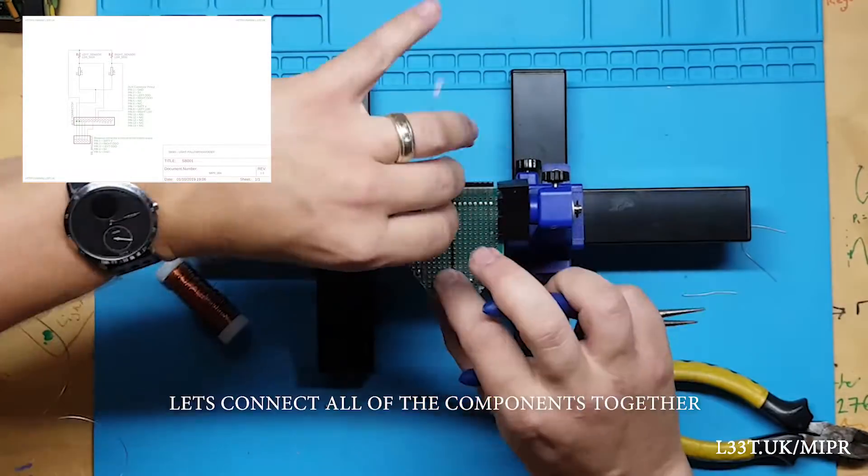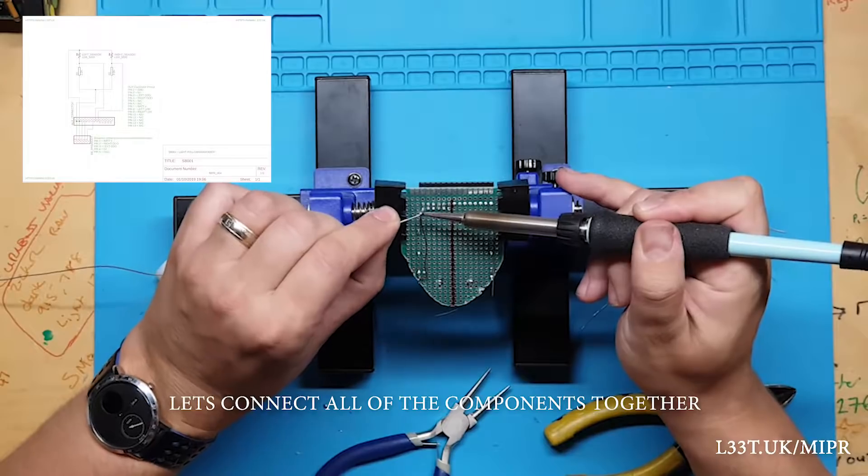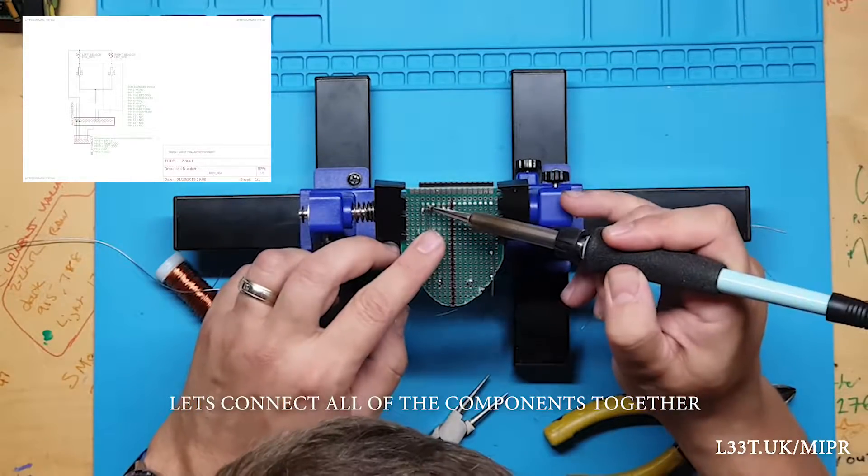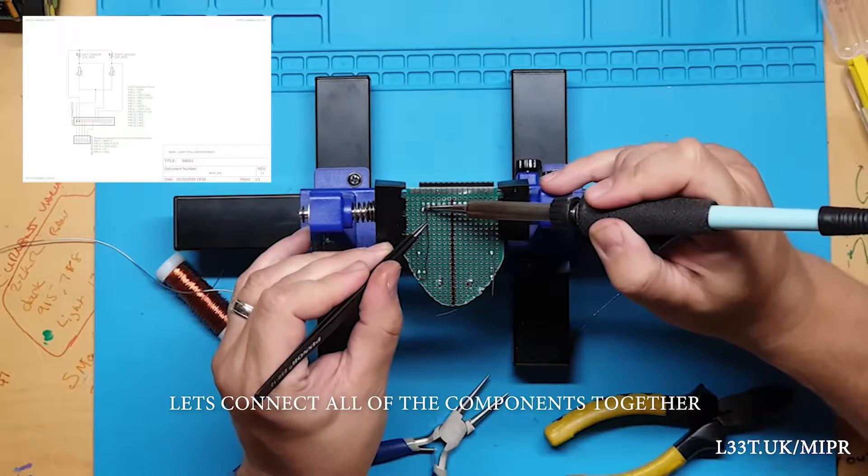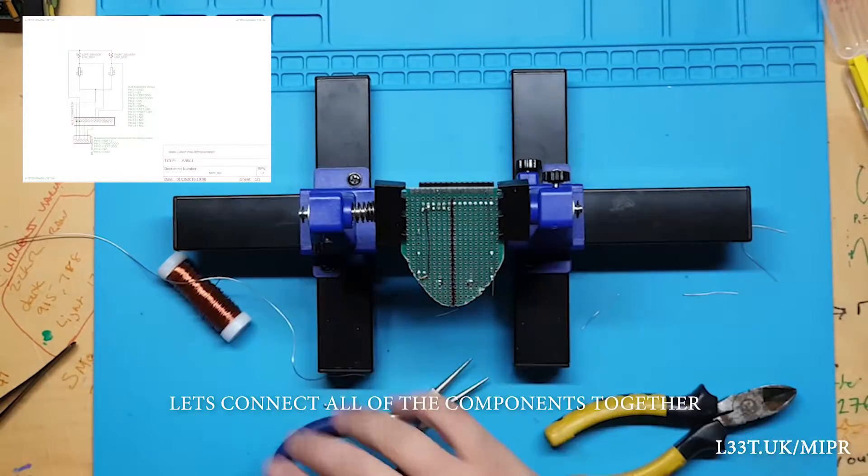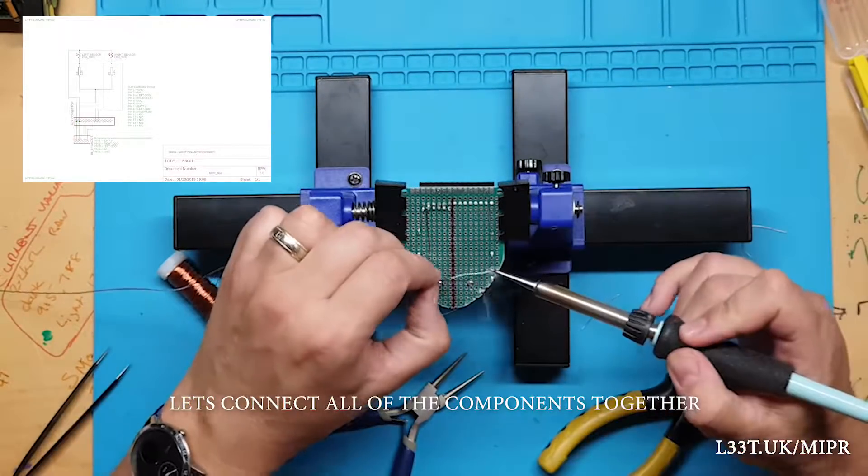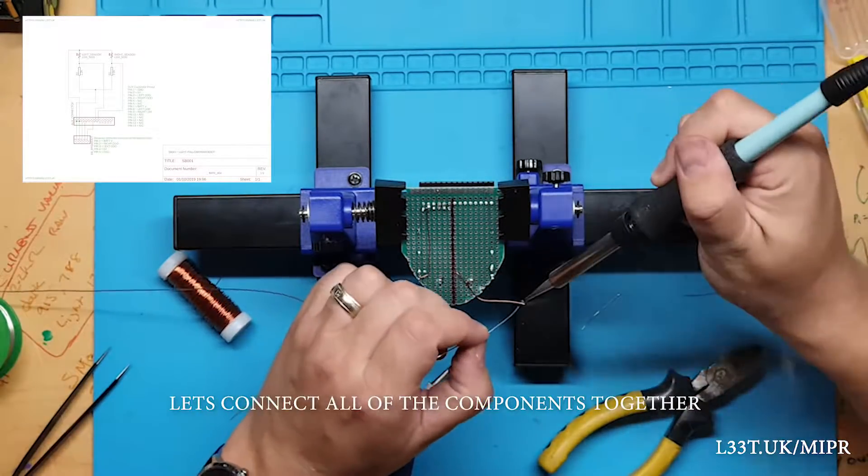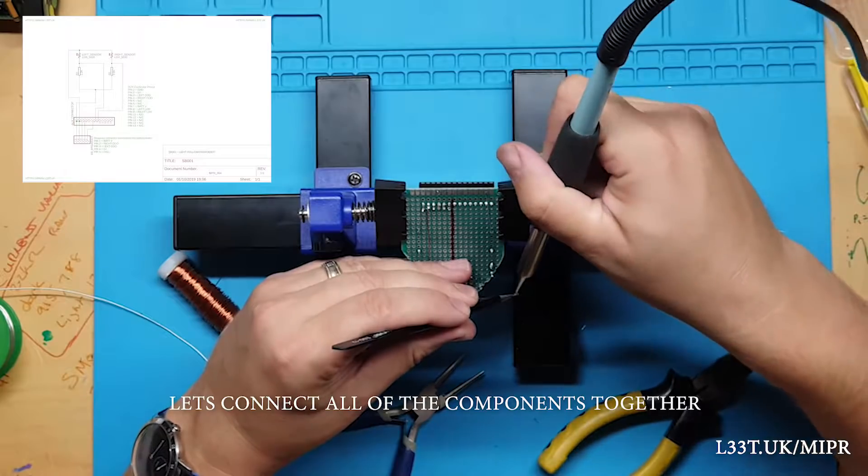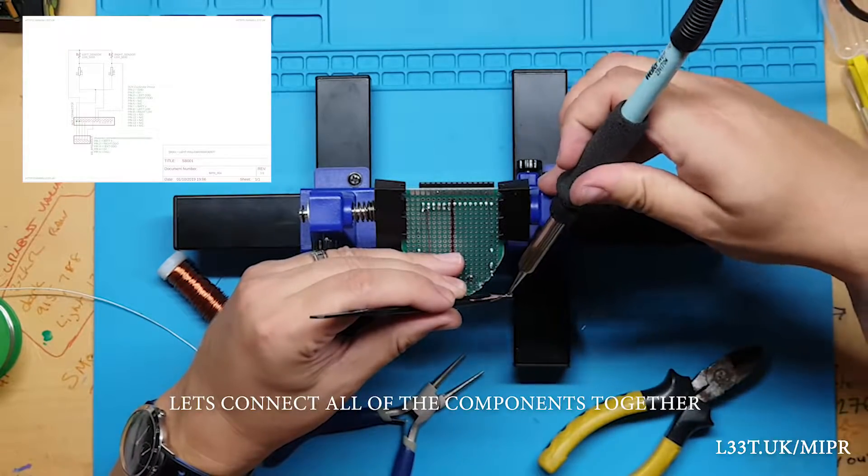We will now connect all of the components together. Use a schematic to guide you through this. As you can see, the sensor board is far simpler than the robot and the battery board that we built earlier. This is why this design is so good. Once the complex robot is built you can add functionality by creating new sensor boards. These sensor boards are usually simpler than the robot.